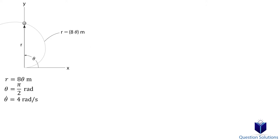We will start by taking the first and second time derivatives of our position equation. The angular velocity we are given is a constant, so the time derivative of that will be zero.